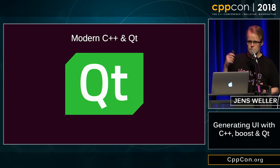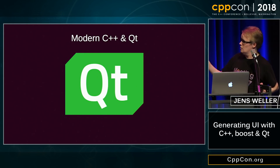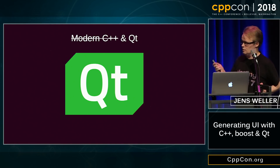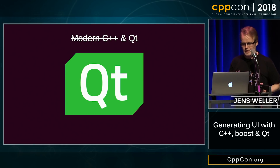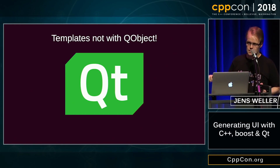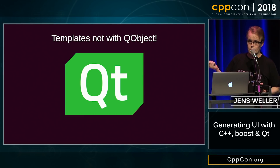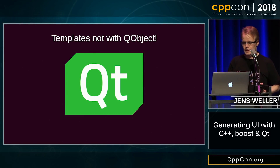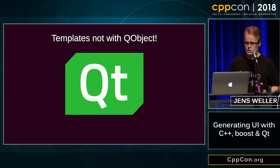I still try to combine modern C++ with Qt, but if you use Qt, one of the reasons is you cannot combine templates with QObject. So if you derive from QObject, you can't use templates, and generic programming is basically off the table — and that's really not what we want.